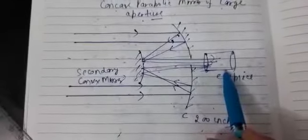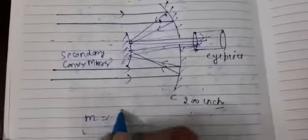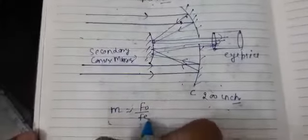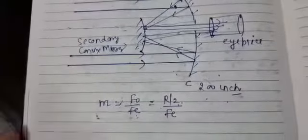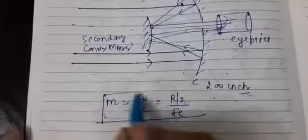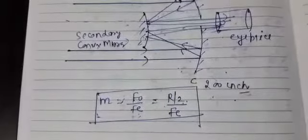The final image is seen through the eyepiece. So in normal adjustment, magnifying power is given by F-naught upon F-e. The focal length of this concave mirror is related to its radius of curvature as F = R/2. This is just a brief description of the reflecting type of telescope.